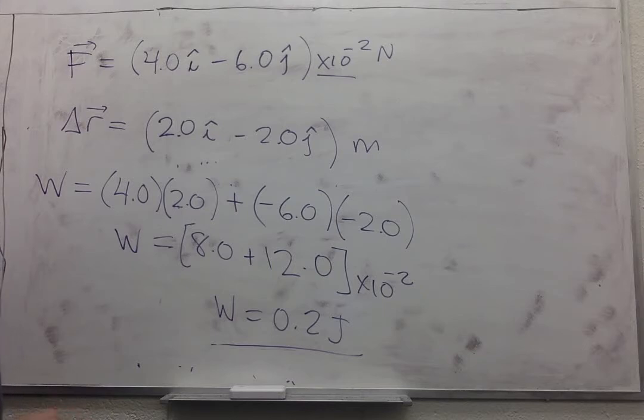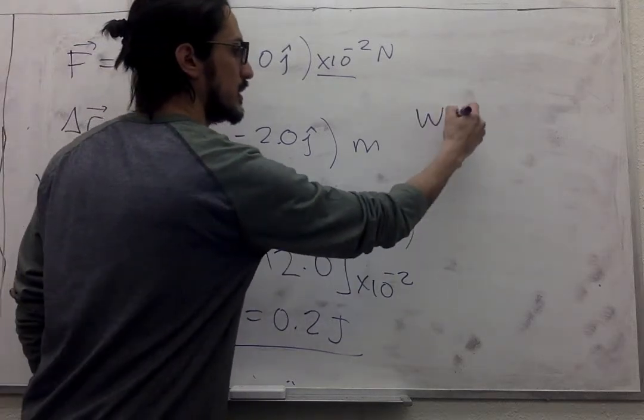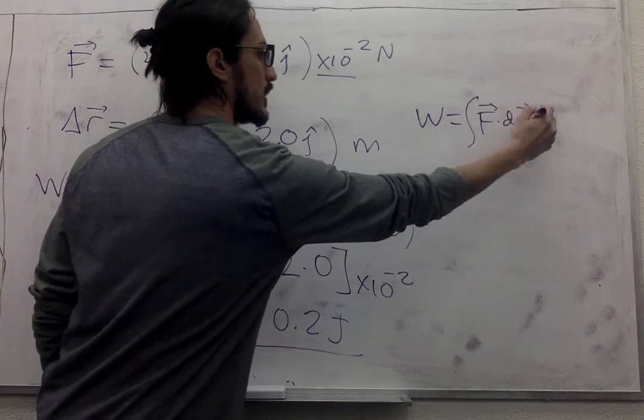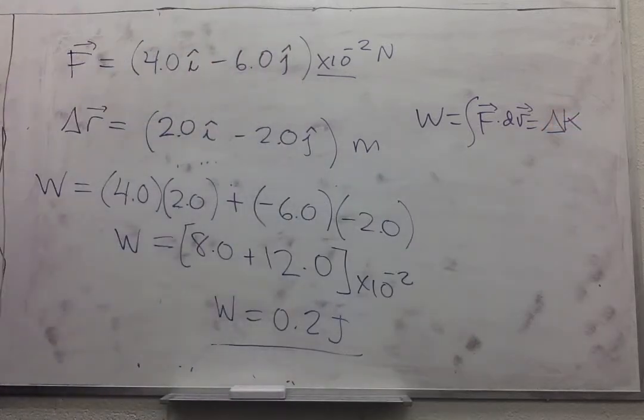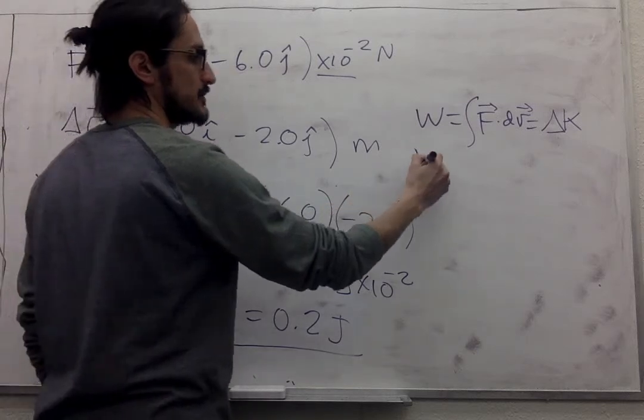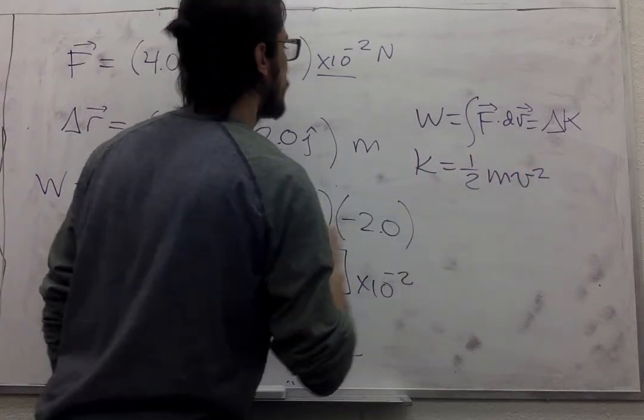What is the bug's speed at the end of this displacement assuming that the speed is due entirely to the wind? Well, the other cool thing about work is that work is equal to the change in kinetic energy. And the kinetic energy is one half of m v squared.